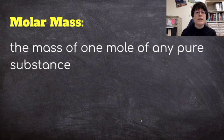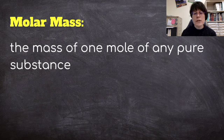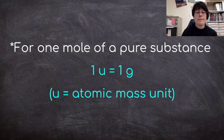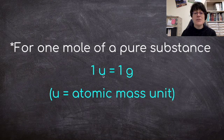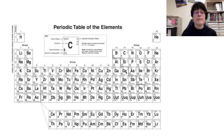When we are doing these problems, we talk about something called molar mass as well. And this is the mass of 1 mole of any pure substance, so like helium or water or sodium chloride. So for 1 mole of a pure substance, 1 atomic mass unit, remember that's what the U means, equals 1 gram. So what I mean by that is we're going to be using our periodic table.